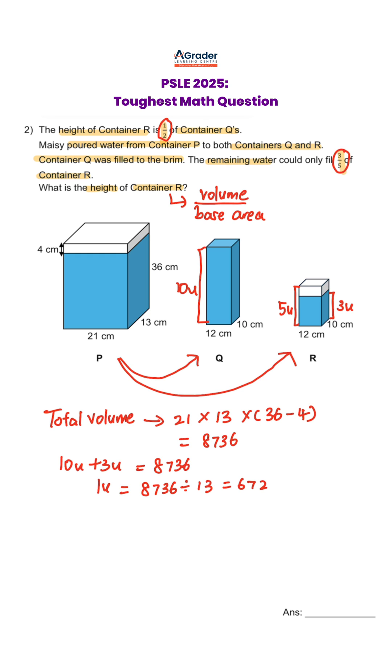The question is asking for the height of container R, so we need to find the volume of container R, which is 5 units. That gives us 3,360. To find the height of R, we take the total volume 3,360 of R, divided by the base area of R, which is 12 × 10, giving us the final answer of 28.